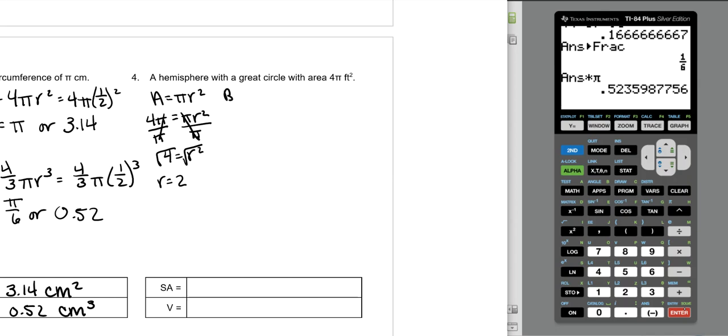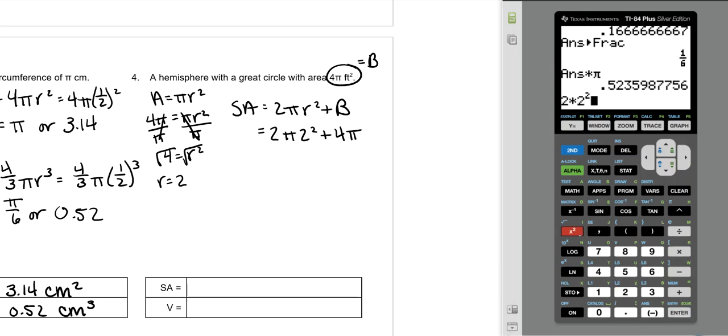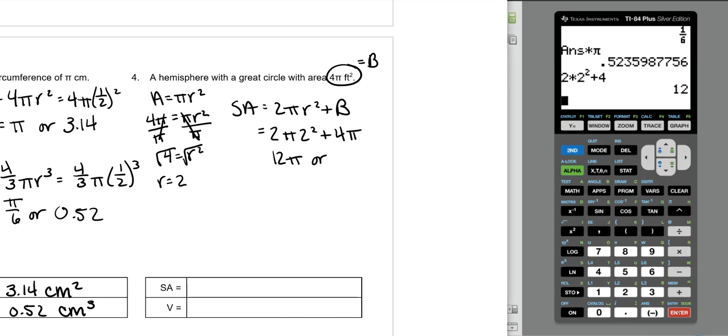It already gave us the area, this is our B. Our surface area is 2πr² + B. So 2π(2²) + 4π. Remember, if you want to put all this in together, evidently you can just go for it. So 12π or 37.7 square feet.